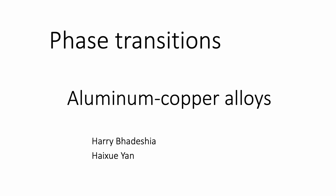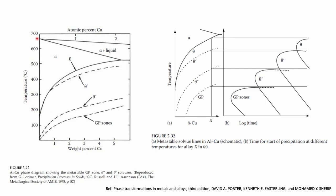Now we talk about the next topic: aluminum-copper alloys. This is the aluminum-copper phase diagram on the aluminum-rich side. Here is the position for aluminum; this is the temperature. This is the alpha phase region, and this is the boundary between alpha phase and a two-phase region including alpha plus theta, theta prime, or other phases. This curve represents the dramatic decrease of copper solubility in alpha phase during cooling. Different phases — GP zone, theta double prime, theta prime, and theta — are marked in this region.